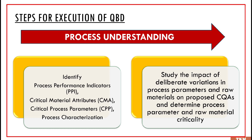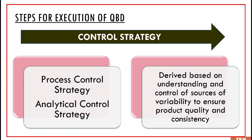Coming to the next part — the control strategy. There are two types of control strategies: process control strategy and analytical control strategy. Both are derived based on understanding and control of sources of variability. In the previous stages, we determined the various sources of variability; in this next step we are trying to control those sources of variability. Only then can we ensure product quality as well as consistency. Therefore, for execution of QBD, those six steps are divided mainly into three main branches: product understanding, process understanding, and control strategy. Through this, we can understand the six steps of QBD.